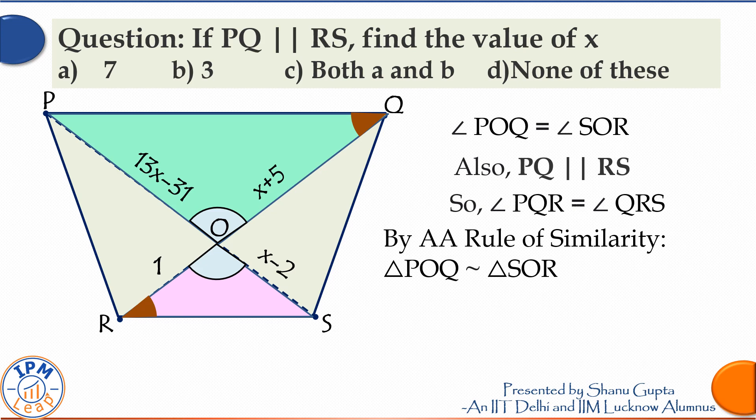One, two, three, and four. This is PO upon SO is equal to... this is QO upon RO.